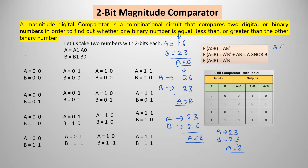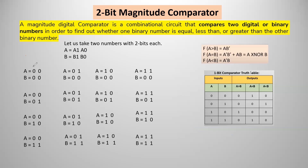Similarly, if a equals 23 and b equals 16, we compare the leftmost digits first. 2 is greater, so no need to compare the next lower digits. Directly we can say a is greater than b. With the help of all these logics, we write the relation between a and b in binary form.